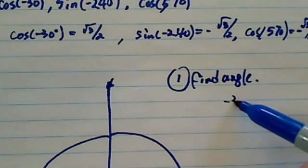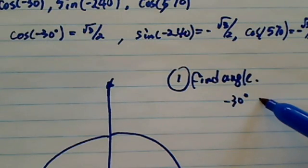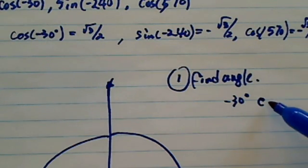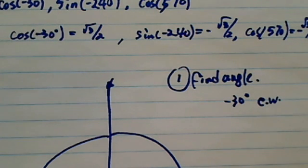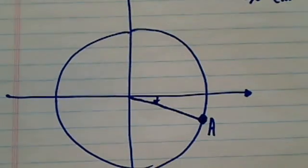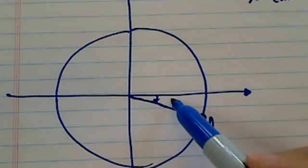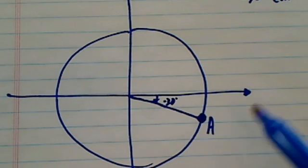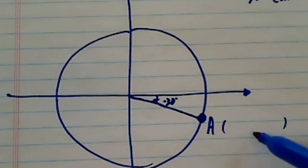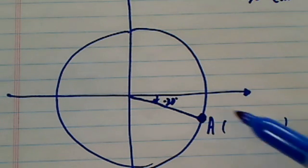So minus 30 is really easy. It's going clockwise, 30 degrees. So when you're drawing the angle, once you find the point, or once you find the angle, you want to put a dot there. So this is minus 30 here. And then this dot has a coordinate, it has an x-y pair.